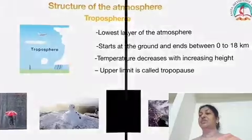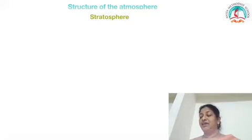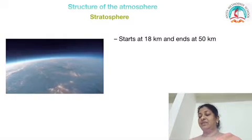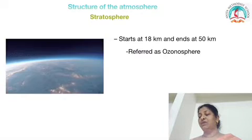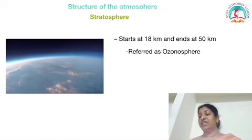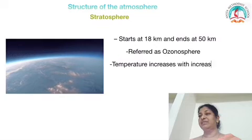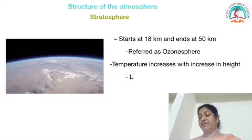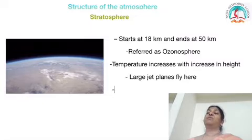The next layer is stratosphere. It starts at 18 km and ends at 50 km. It is referred to as the ozonosphere — it has sufficient ozone to block most ultraviolet radiation from the sun. In this layer, the temperature increases with an increase in height. Large jet planes fly here. The upper limit of the stratosphere is called stratopause.